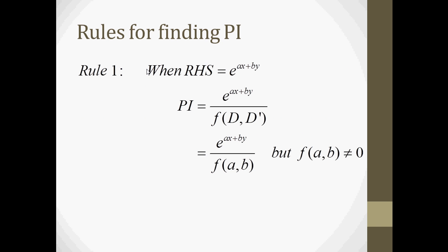The first rule for particular integral: when the right-hand side of the partial differential equation is e to the power ax plus by, then the particular integral will be equal to e to the power ax plus by upon f(d, d'). We put in place of d the coefficient of x as a, and in place of d' the coefficient of y as b. But the function f(a, b) must not equal 0.